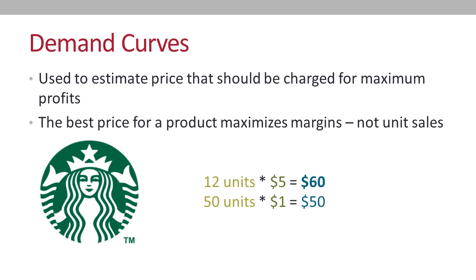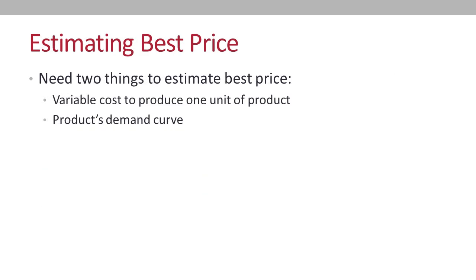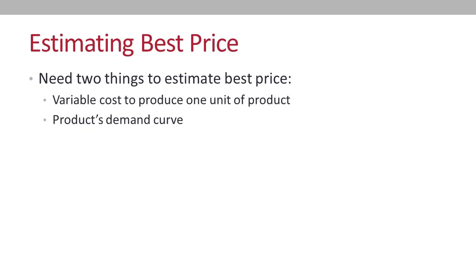For example, Starbucks would rather sell 12 cups of coffee for $5 each than 50 cups of coffee for $1 each. To estimate that best price, we need two things: our cost to produce the product to be sold, and the product's demand curve.